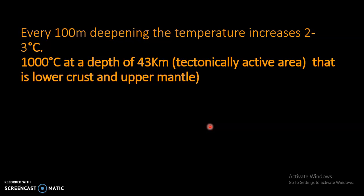If we talk about the tectonically active area, which is present in the lower crust and upper mantle, the temperature is about 1000 degrees Celsius at a depth of 43 kilometers. This is the area where earthquakes and volcanoes originate, and hence it is called the tectonically active area. Most of the oceanic crust is an active area for the formation of the sea floor and volcanoes.